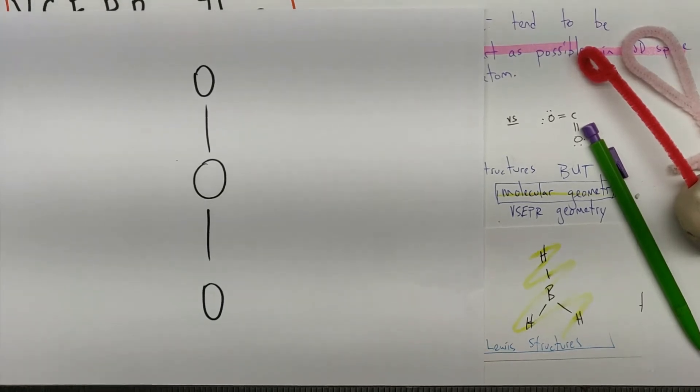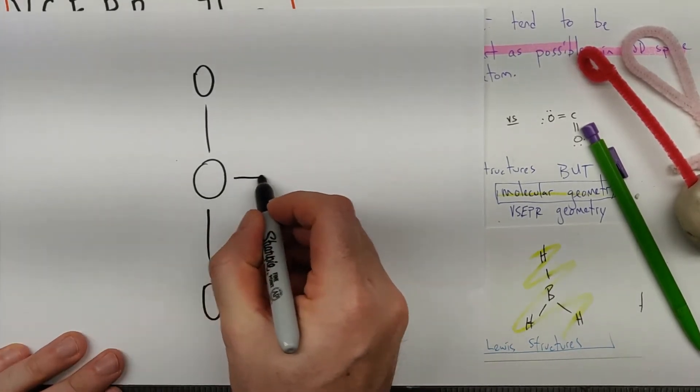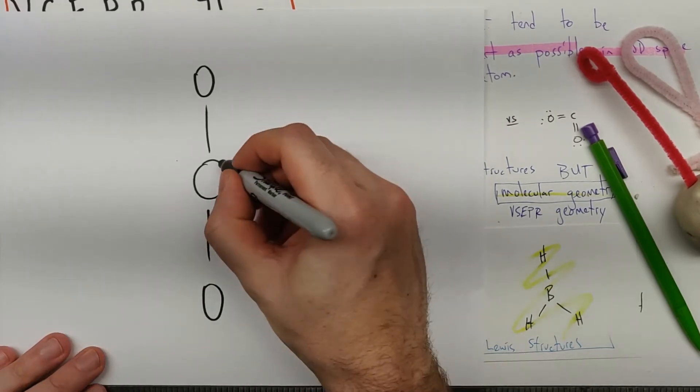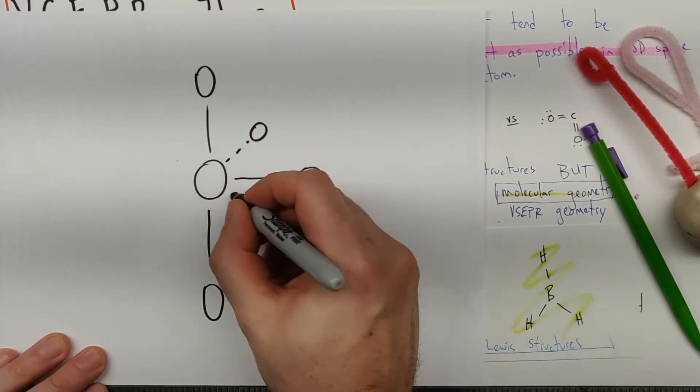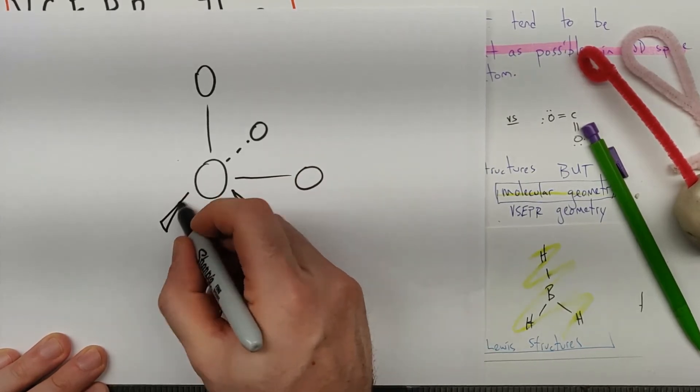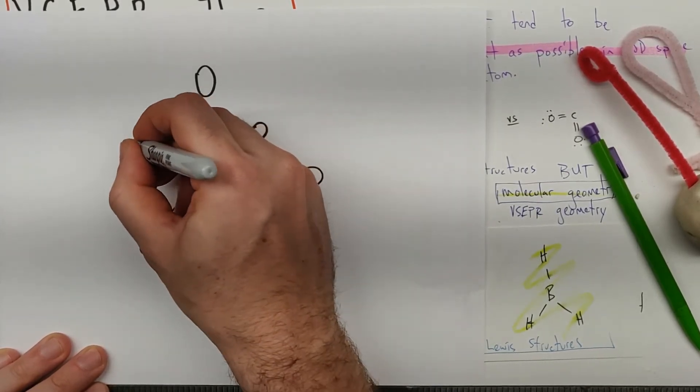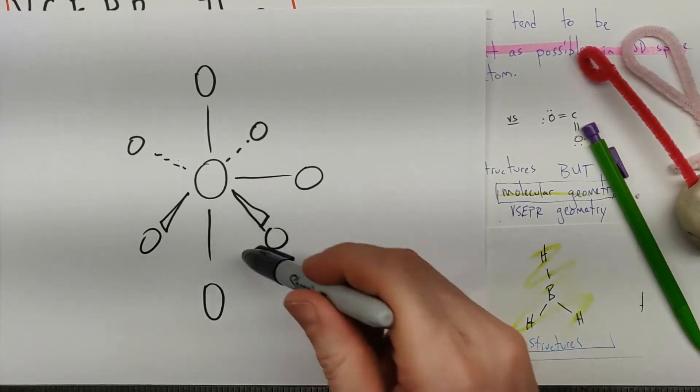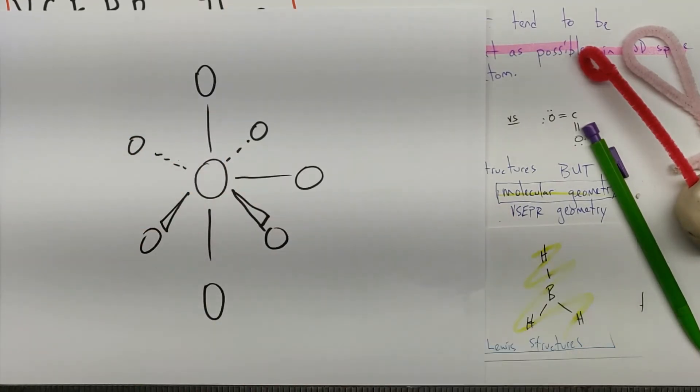And then you have five atoms in that central plane. And we are limited by my abilities here. But we have one there, one there, one there. Then coming out again and going in again. And we have pentagonal bipyramidal.